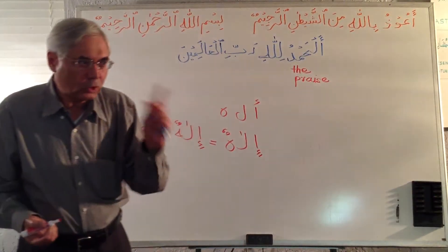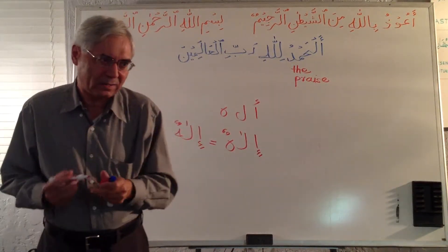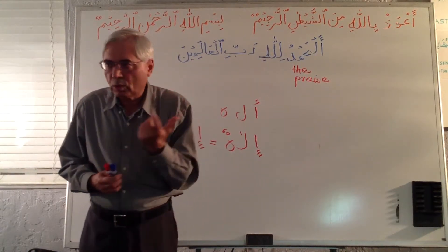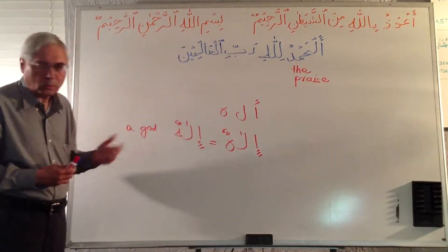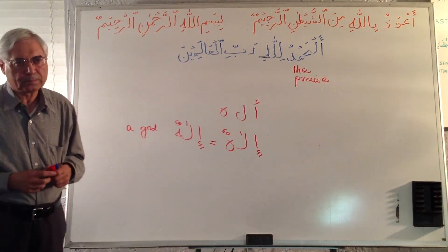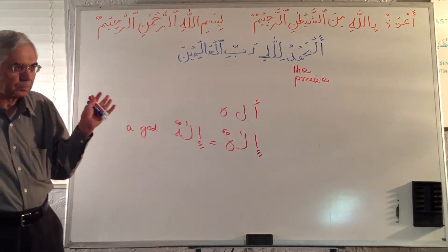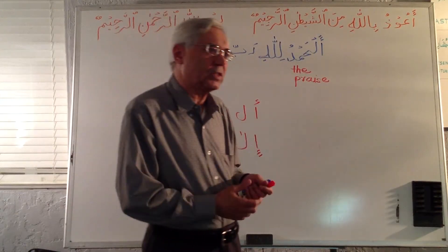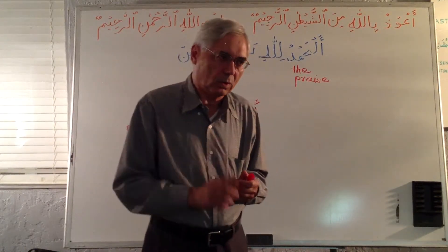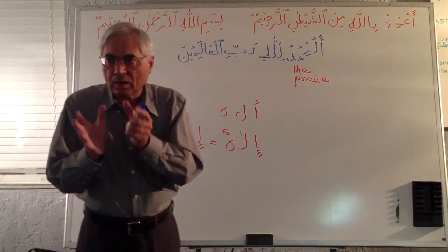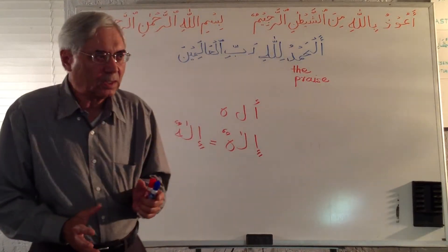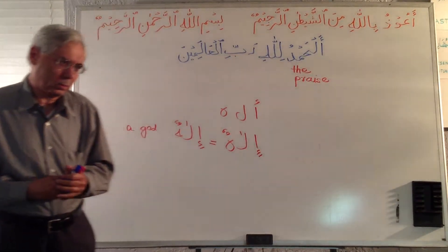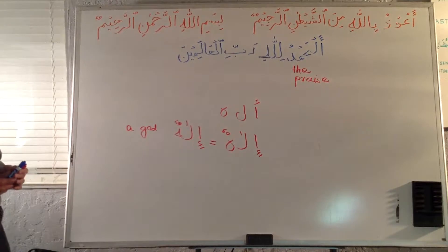All nouns with two Dhammas have an 'a': a book — Kitabun, a praise — Hamdun, a god — Ilahun. Just any god. It can be an idol, it can be a desire. Anything that you worship is your Ilahun. Anything toward which you have love, devotion, and submission — that particular thing is Ilahun. A god. Any god.